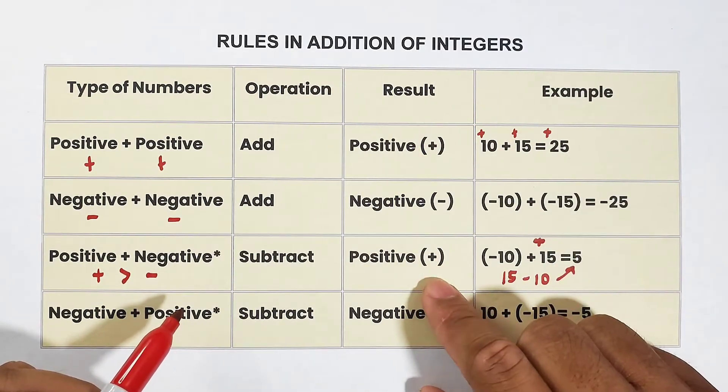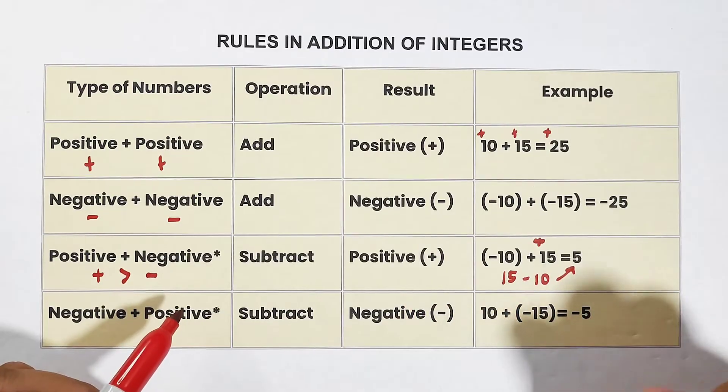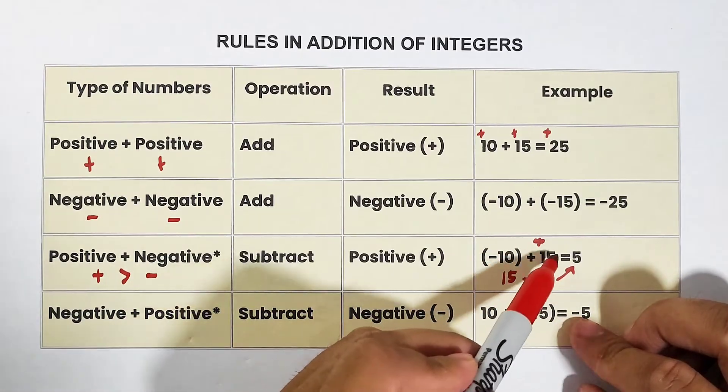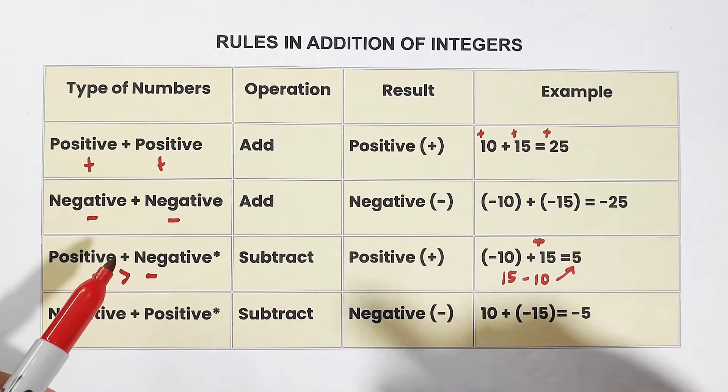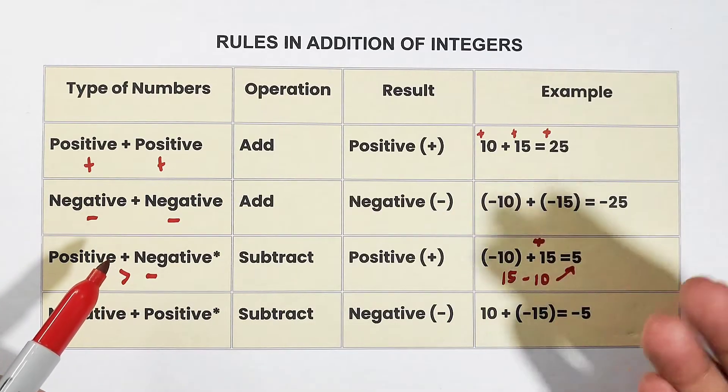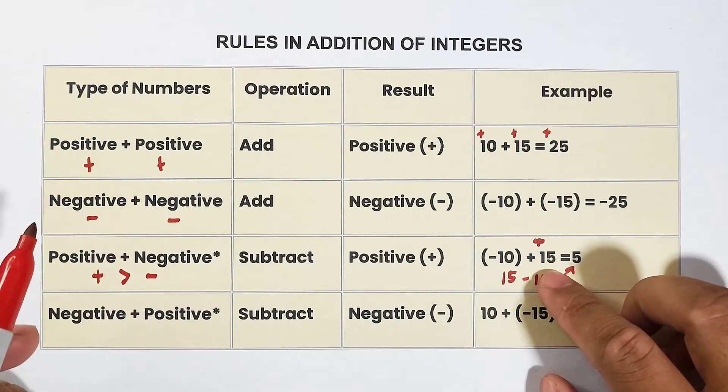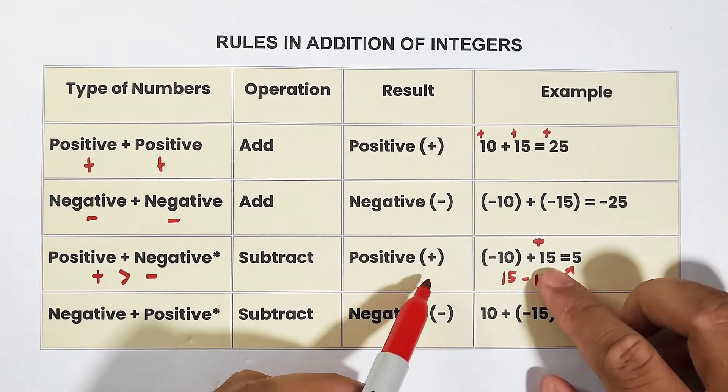Now for the result, since this is positive, what will you do? Check first which of the two has the higher absolute value. Definitely, the one with a greater absolute value is 15. That's why you will copy the sign of 15, which is positive. That's why this is positive 5.